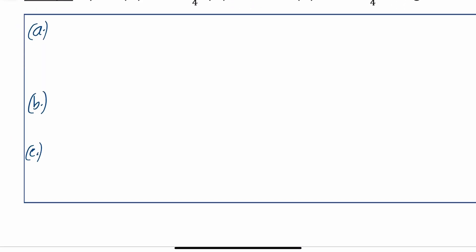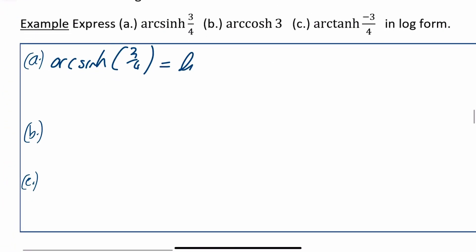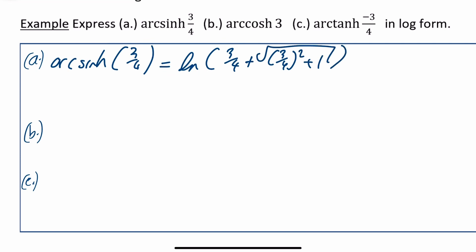On to three examples. First, find arc hyperbolic sine of 3/4. Using the result we just derived, it's ln of — x value is 3/4 — so 3/4 squared plus 1, square root of that, plus 3/4. That works out as ln of 3/4 plus 5/4, which is the same as ln of 2.